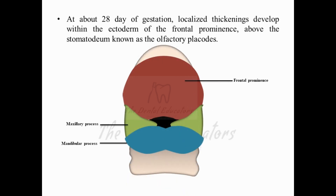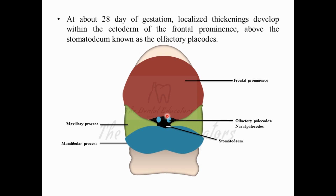At the 28th day of gestation, localized thickening starts to develop within the frontal prominence. That thickening, initially known as the primitive nasal cavities, will convert into large nasal placodes. You can see these have converted into two large nasal placodes — two olfactory placodes — which have developed within the ectoderm of the frontal prominence, corresponding to the right and left nostrils.